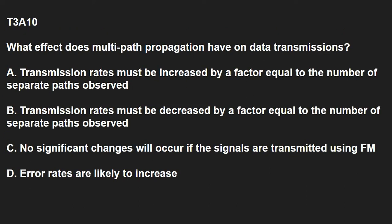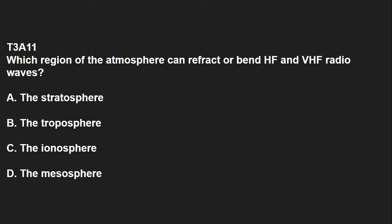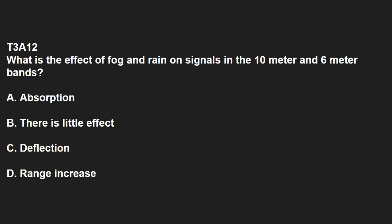T3A10: What effect does multipath propagation have on data transmissions? The answer is error rates are likely to increase. T3A11: Which region of the atmosphere can refract or bend HF and VHF radio waves? The answer is the ionosphere. T3A12: What is the effect of fog and rain on signals in the 10-meter and 6-meter bands? That causes little effect.